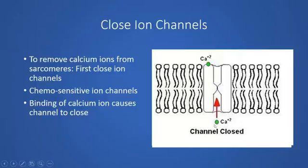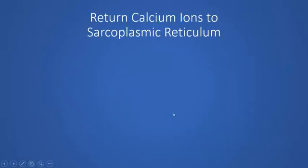Closing the gates doesn't yet get the calcium away from the sarcomeres, but as long as the gates are open, trying to pump calcium back in wouldn't be effective — it would be like herding chickens back into an enclosure while leaving the door open. So closing the gates is the essential first step before actually returning the calcium to the sarcoplasmic reticulum.